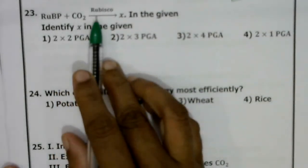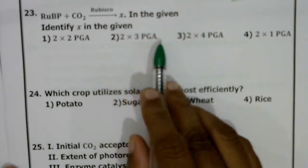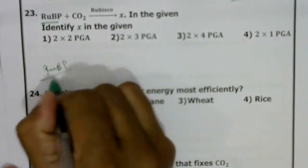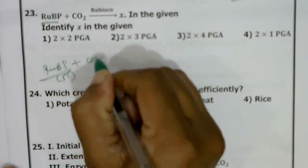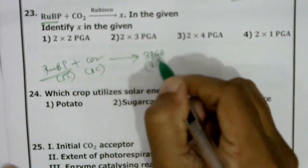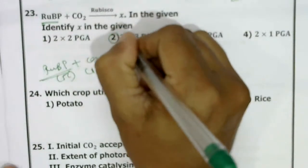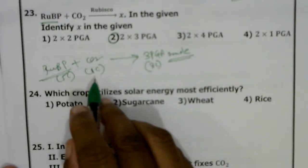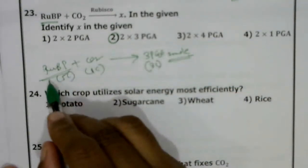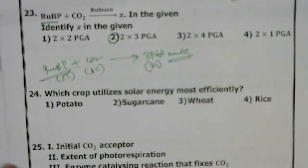RUBP + CO2 (via Rubisco) → X. Identify X: two molecules of 2-PGA, 3-PGA, 4-PGA, or 1-PGA? RUBP is the initial 5-carbon acceptor of CO2. RUBP (5C) + CO2 (1C) forms an unstable 6-carbon compound which immediately breaks down into two molecules of 3-carbon 3-PGA (3-phosphoglyceric acid). Correct answer: second option — two molecules of 3-PGA.